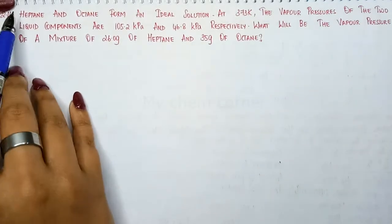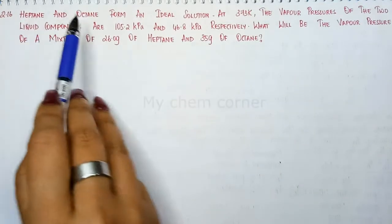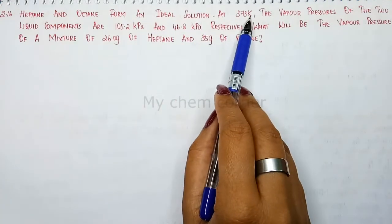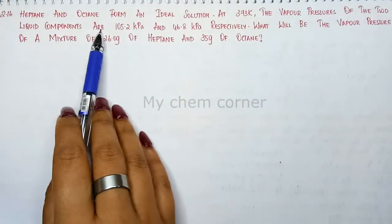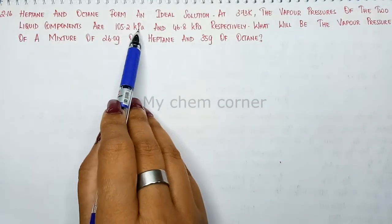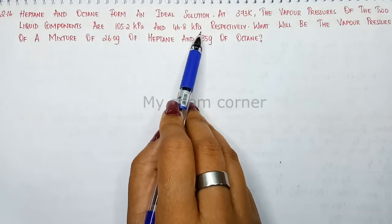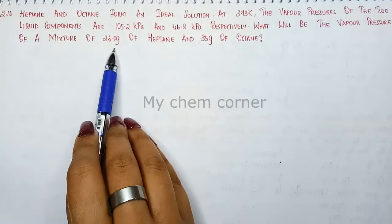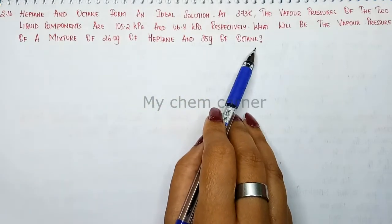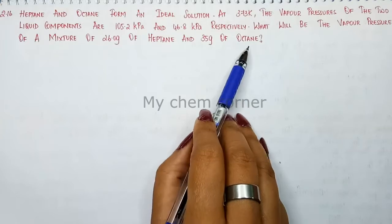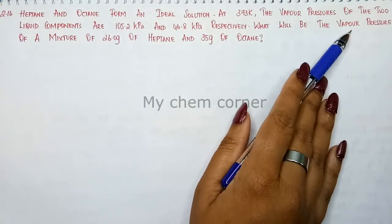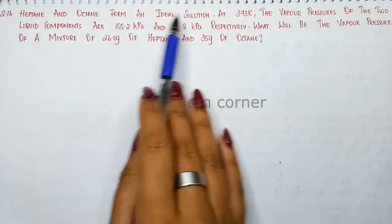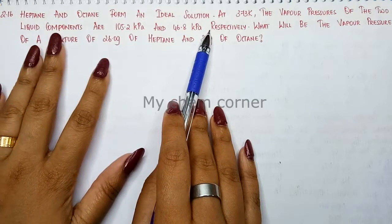Next is problem number 2.16. Heptane and octane form an ideal solution at 373 Kelvin. The vapor pressure of the two liquid components are 105.2 kilopascal and 46.8 kilopascal respectively. What will be the vapor pressure of the mixture of 26 grams of heptane and 35 grams of octane? We are supposed to find out the vapor pressure of the mixture given its respective vapor pressures of the liquid components.